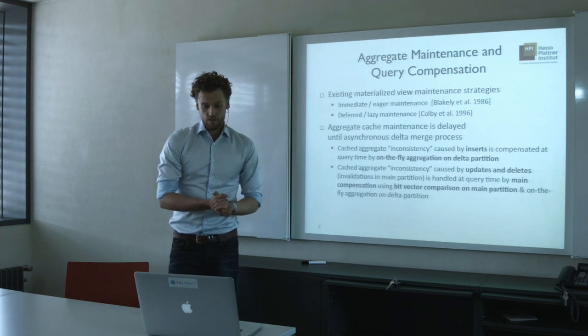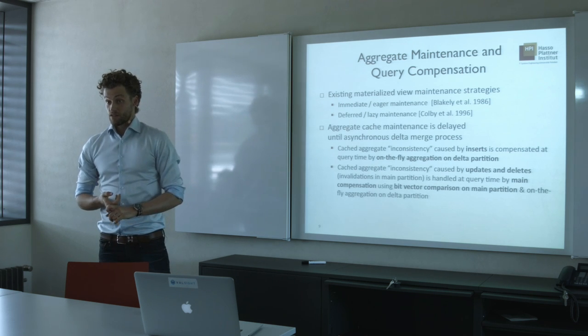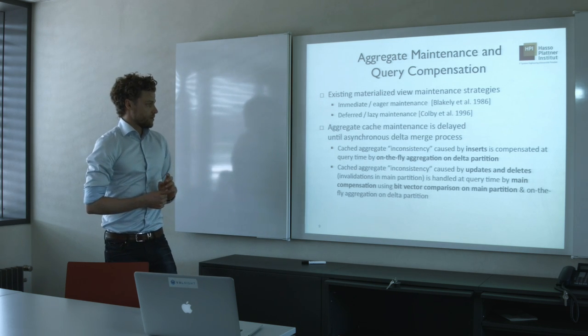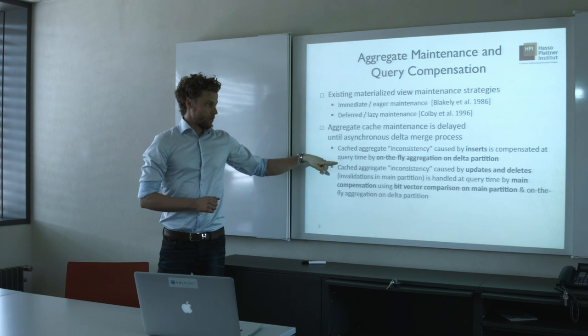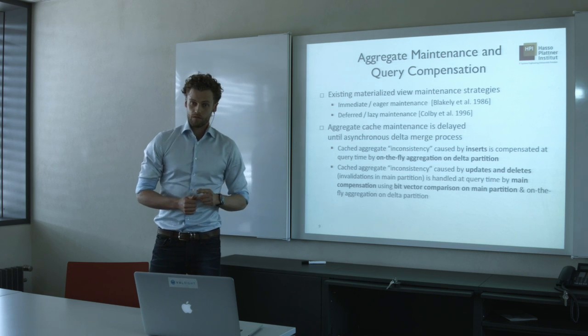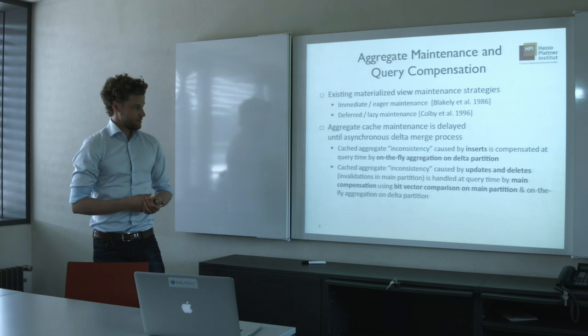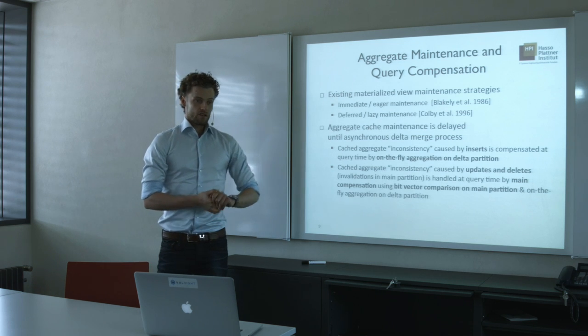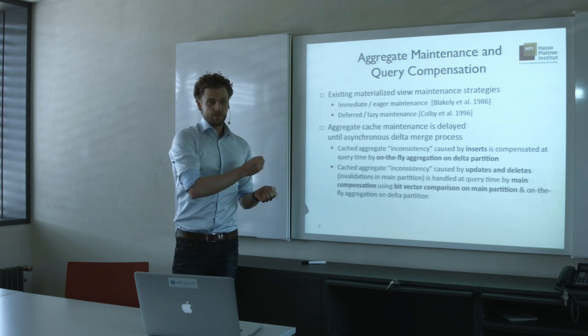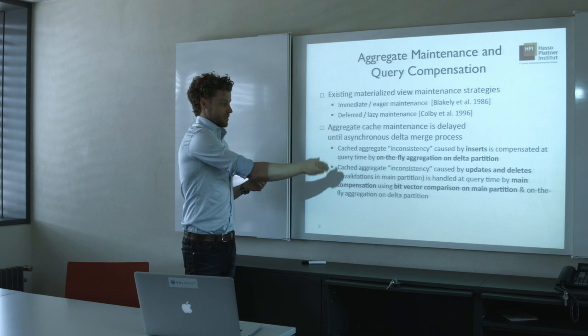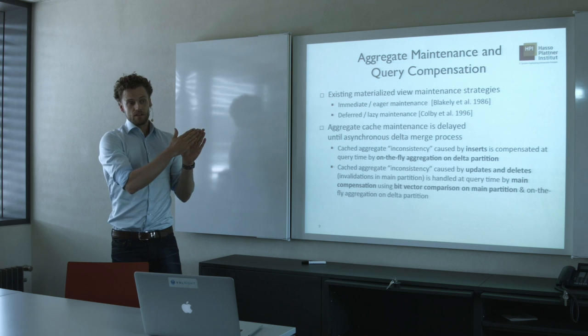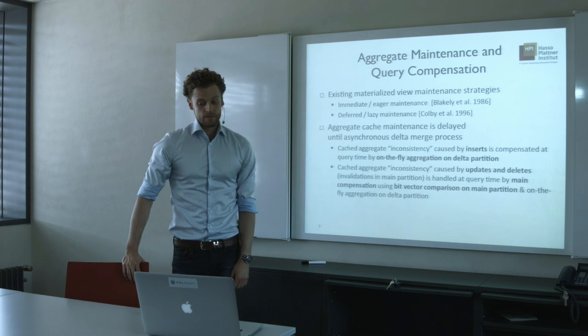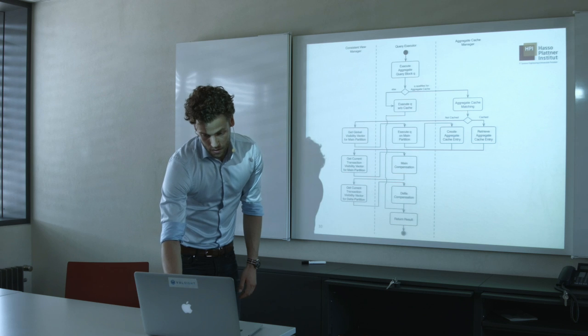The central part of the thesis is the aggregate maintenance and query compensation. As I just said, we have those two existing maintenance strategies, but we're doing things differently. What we do is we always compensate a cached aggregate query with respect to inserts by aggregating on the fly the delta partition. And updates and deletes which affect the main partition are handled by doing a bit vector comparison of those two snapshots: the visibility bit vector at the time of cache creation and the one at runtime of this aggregate query. Then we can filter out the records that have been deleted and we can subtract them from the aggregate result.